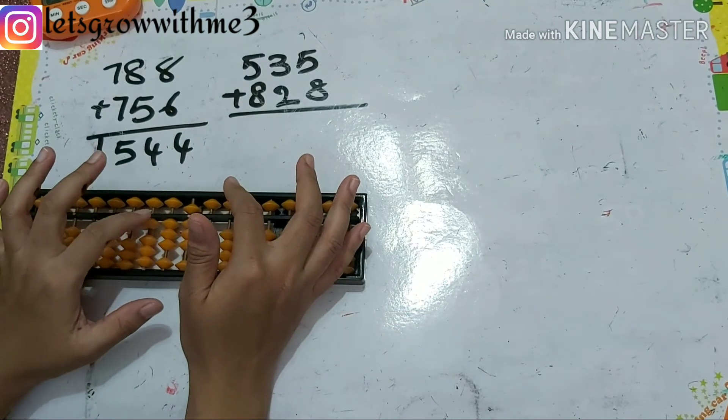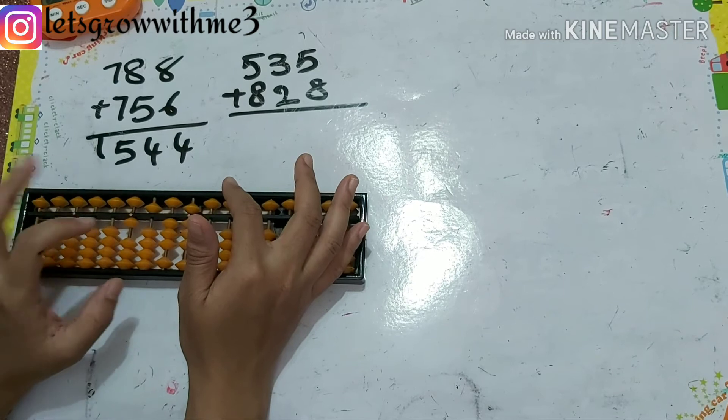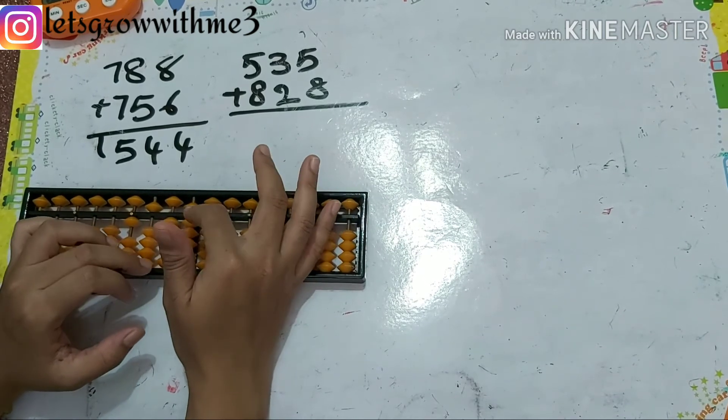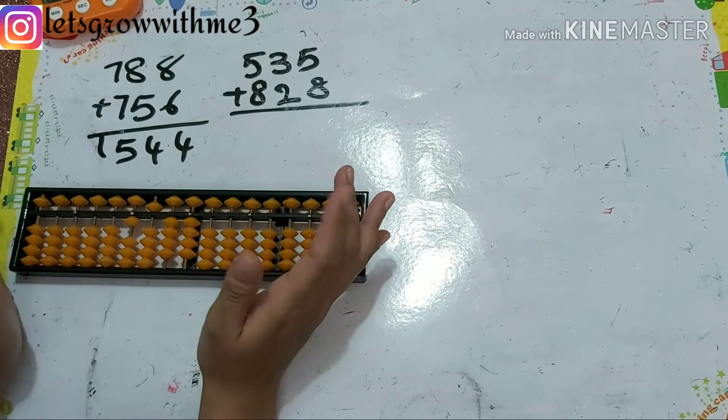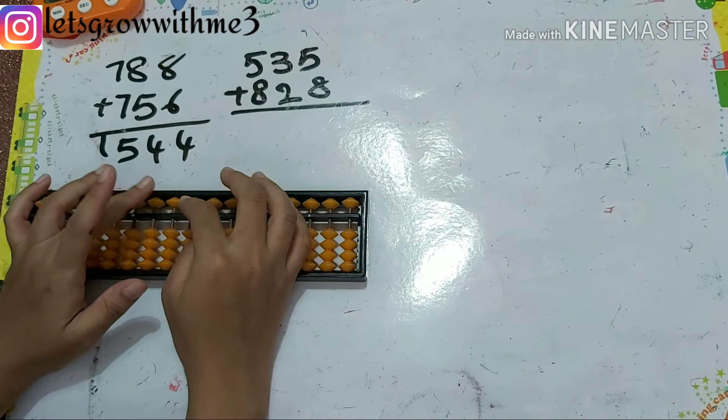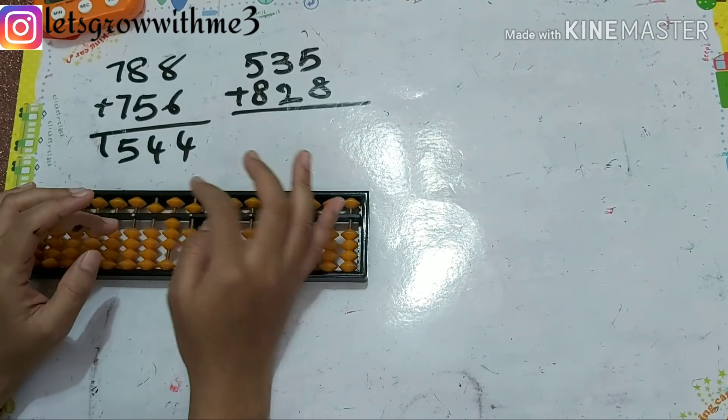So how to do plus 10? Plus 50 minus 40. Next I have papa up, baby up, mama up, babies up. So answer is 1544.